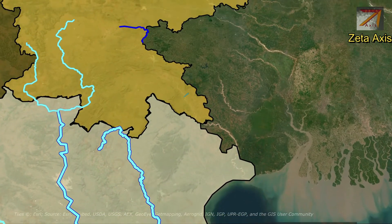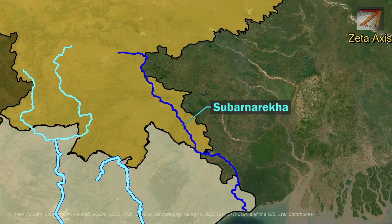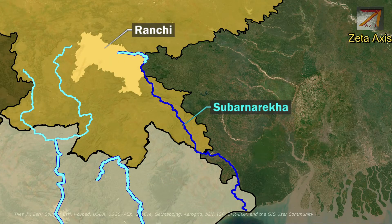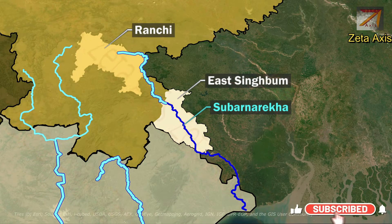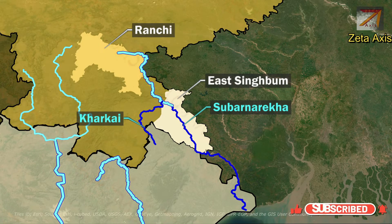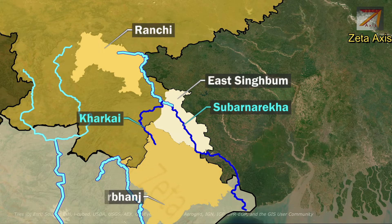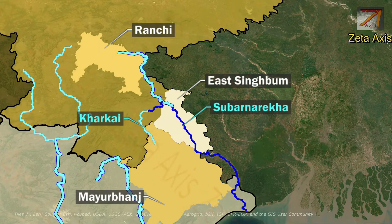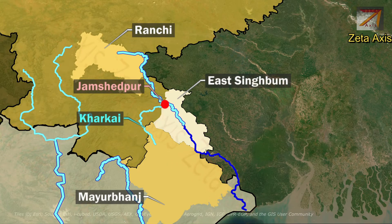The next important river of Odisha is the Subarnarekha. The Subarnarekha river originates in Ranchi district of Jharkhand and flows through East Singhbhum district, where it meets the Kharkai river, which is a major tributary. The Kharkai river originates from Mayurbhanj district in Odisha and forms a short boundary between Odisha and Jharkhand before meeting the Subarnarekha in Ghatsila.